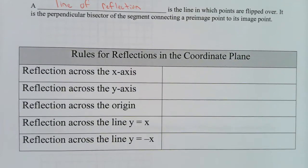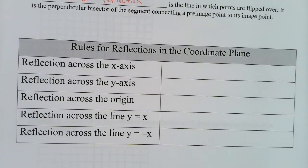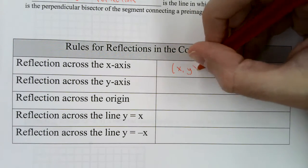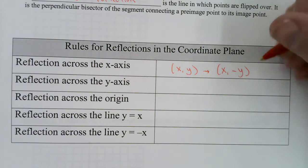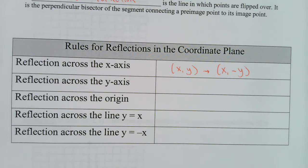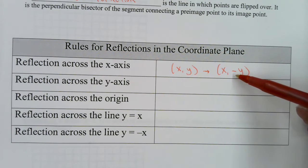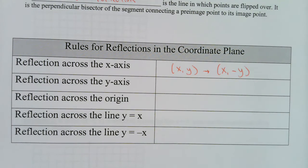Here are five types of reflections we may do in this class. We're definitely going to do the first, second, and fourth ones a lot. For reflections across the x-axis, the rule is (x, y) maps onto (x, opposite y). Opposite means whatever sign y is originally, you take the opposite: if it's negative it becomes positive, if it's positive it becomes negative.